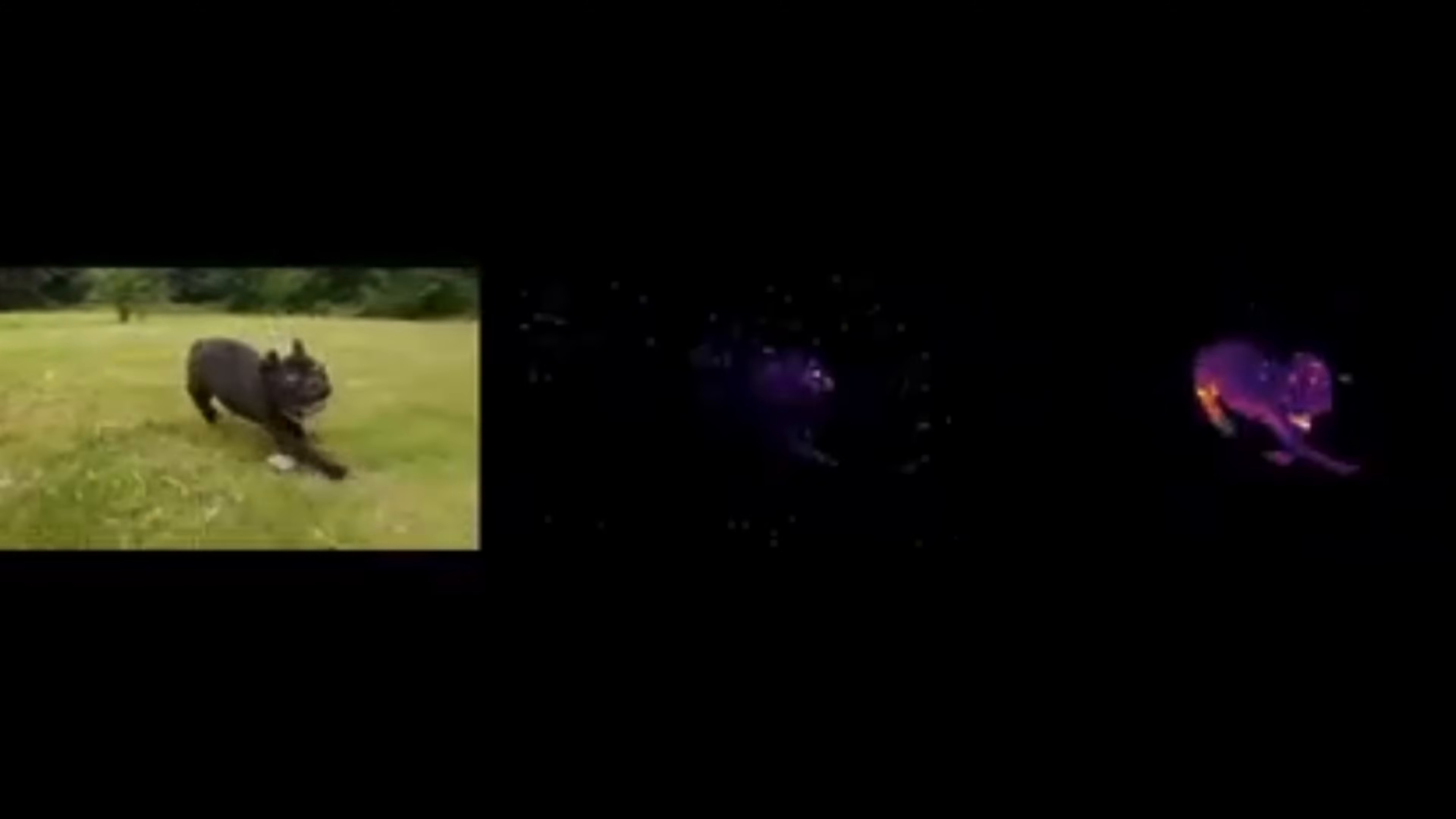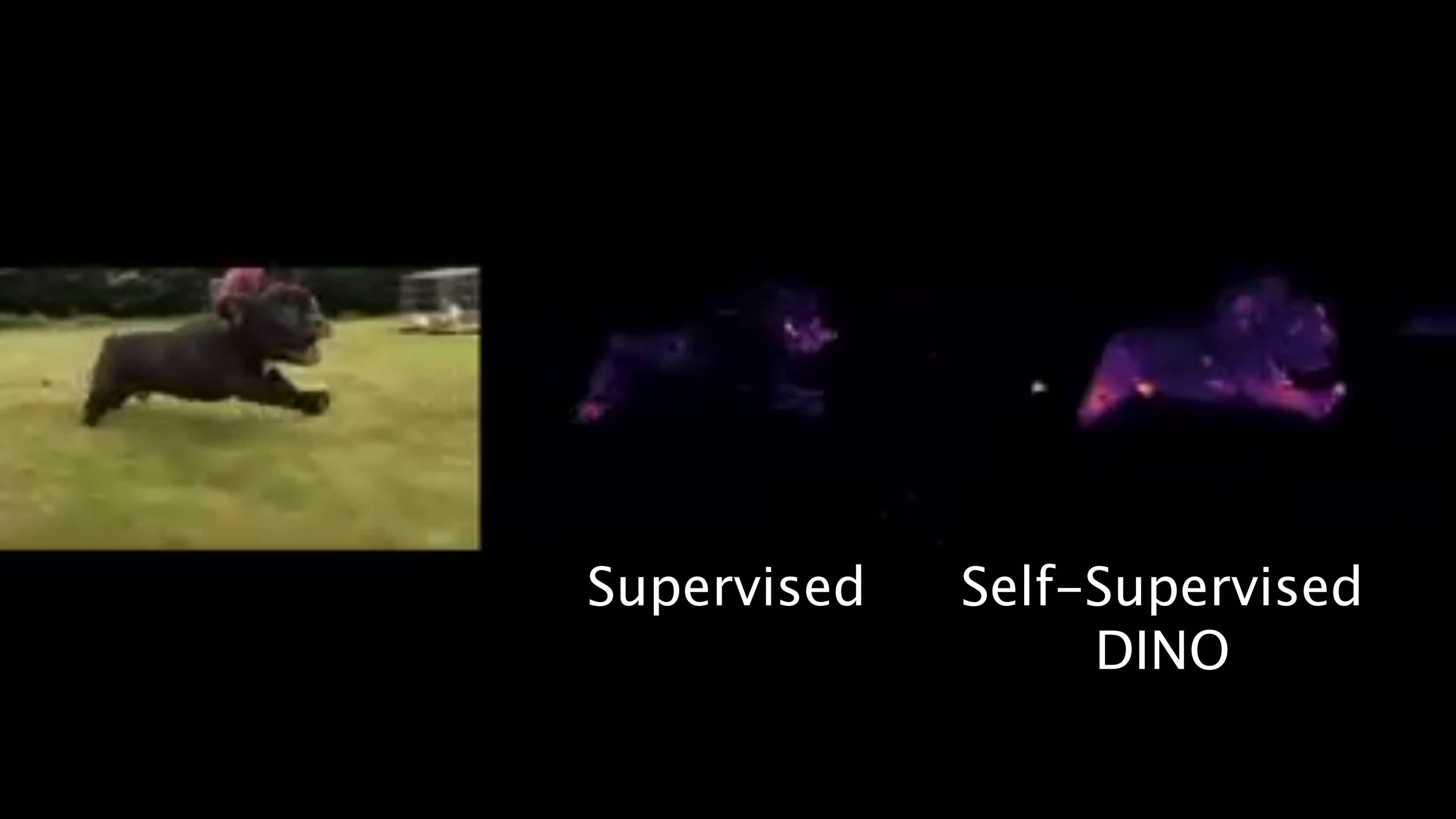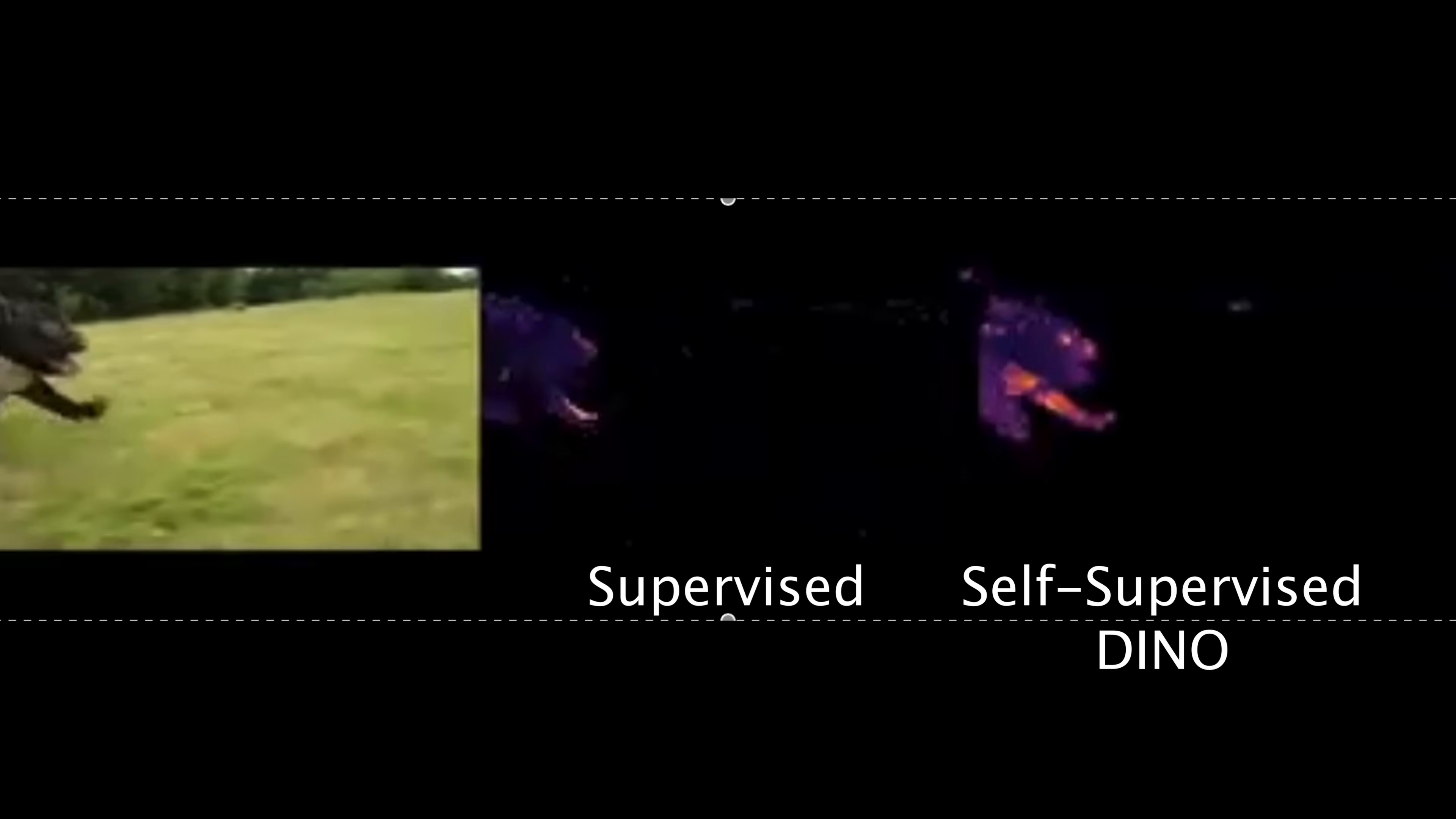Here we visualize the local attention maps. Compared to model trained with supervised learning, the attention maps from DINO are cleaner and focus more on the object. Here are more examples.